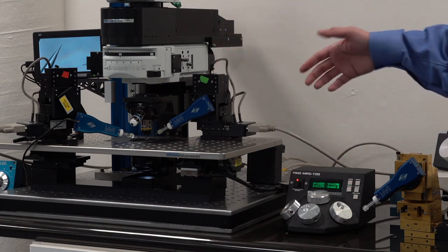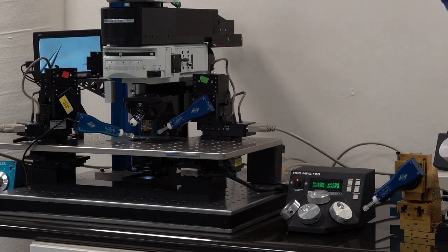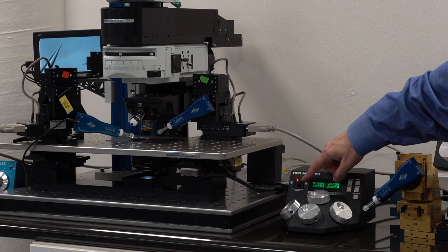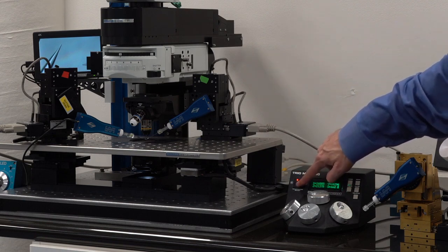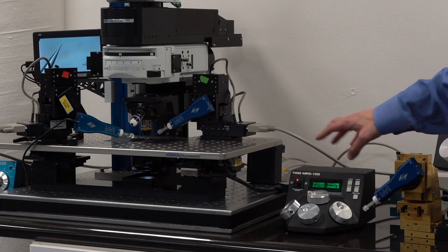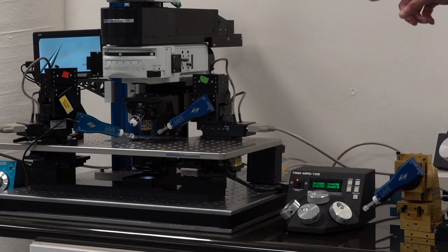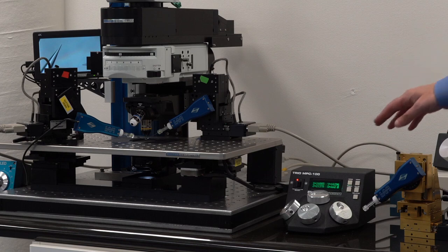So I can then switch between manipulator one and two. With this one, you cannot daisy chain and have four devices, just two. But it's a very, very simple box.